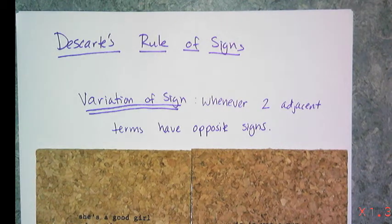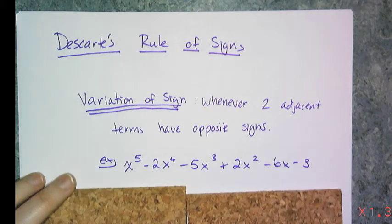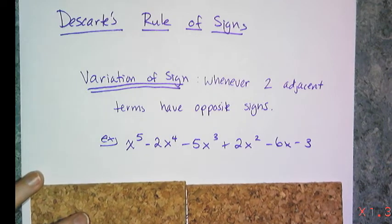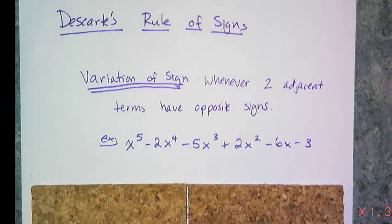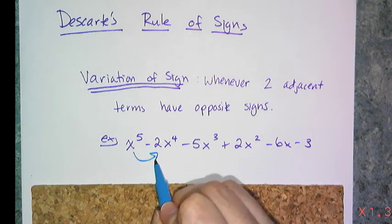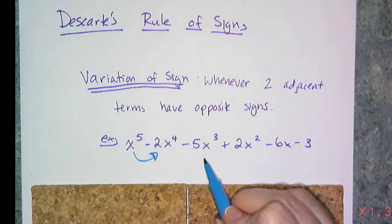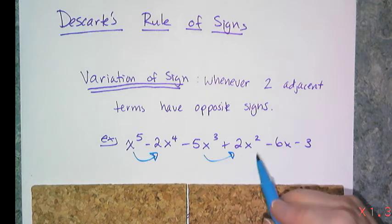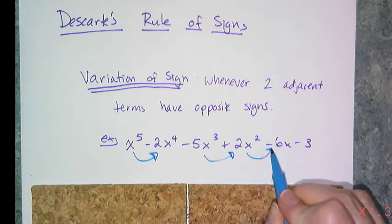A variation of sign is whenever two adjacent terms have opposite signs. So if I look at this expression right here — x to the 5th minus 2x to the 4th, and so on — I'm looking for variations in the sign. I go from positive to negative there, that's one variation; from negative to positive there, that's a second variation; and from positive to negative there, that gives me three variations in sign.